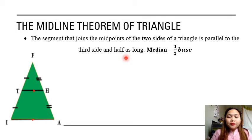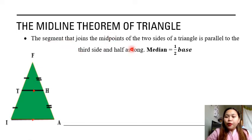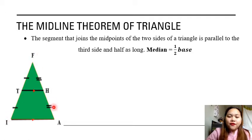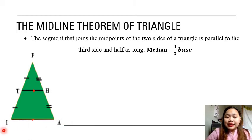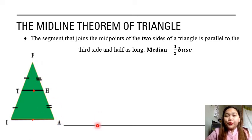Let's use the first image shown earlier. We have triangle IFA. According to the midline theorem of a triangle, the segment joins the midpoints of the two sides. We have three sides because it is a triangle: side IF, side FA, and side IA. Side IA is our base, and then we have the two legs — side IF and side AF. You can read this as AF or FA.